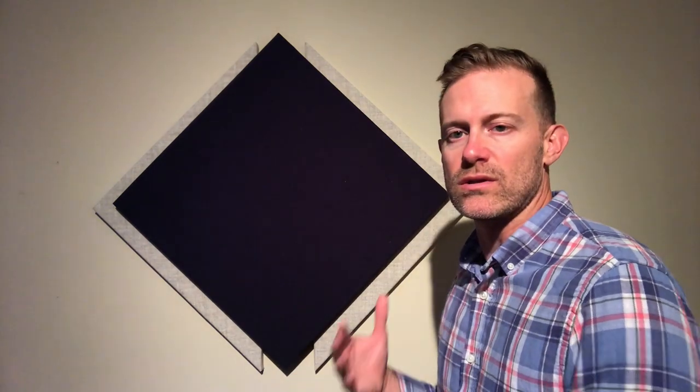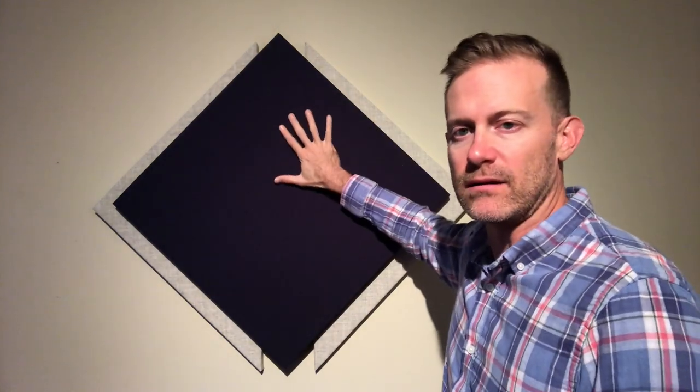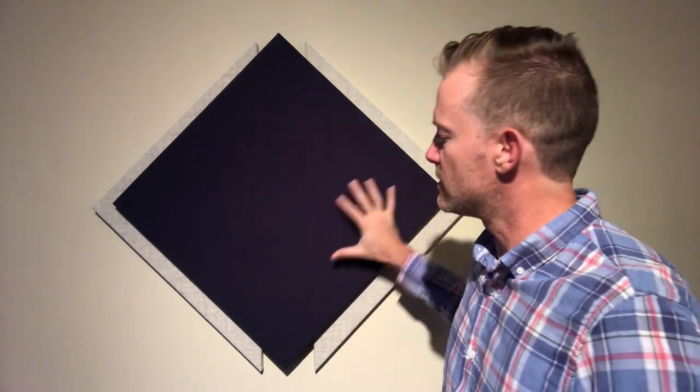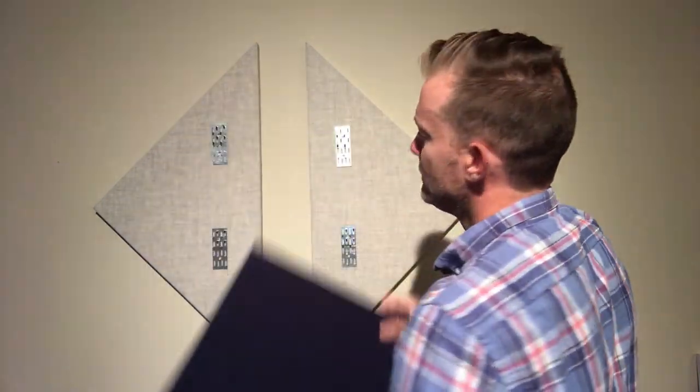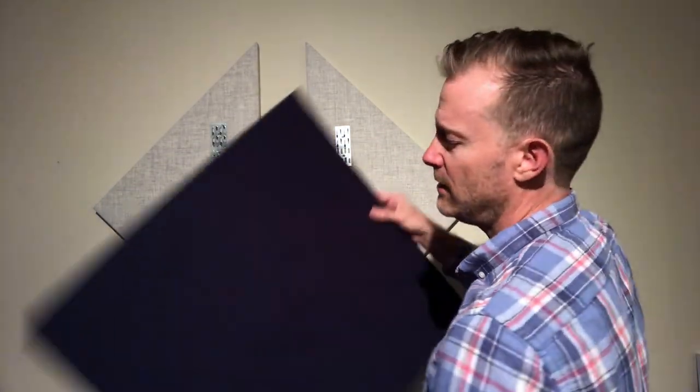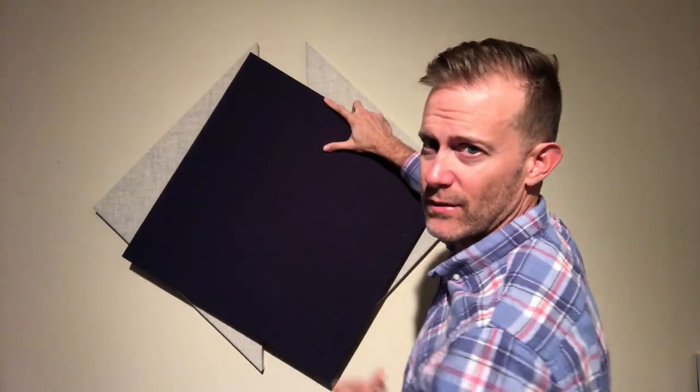What I'm going to show you is how we use the one-sided impaling clips on the wall for the triangles, and then a double-sided impaling clip to hold this 24 by 24 inch square on top of those triangles. I'm going to show you how we get those triangles on the wall and then this square on top of those triangles.